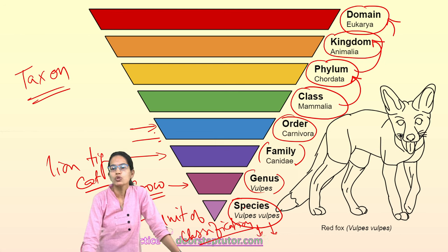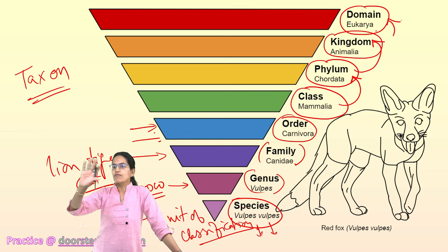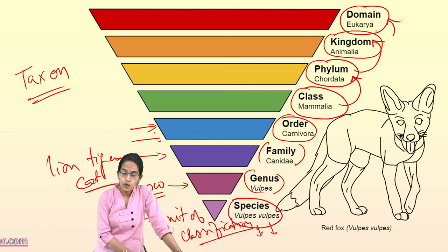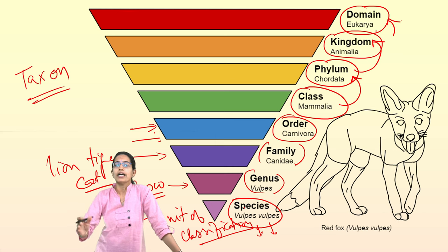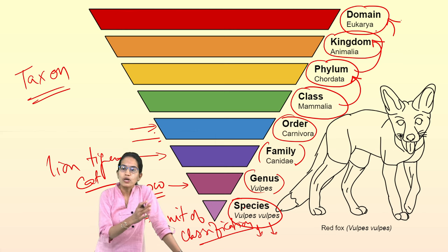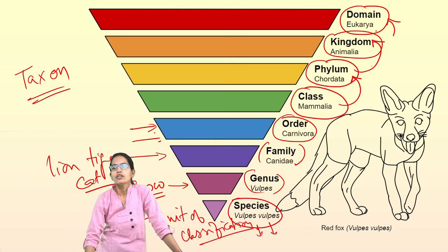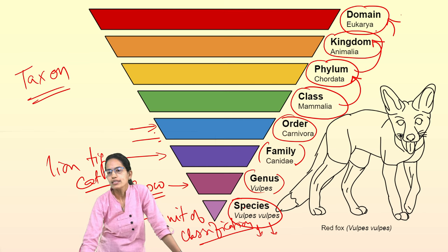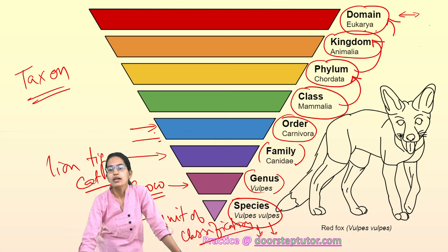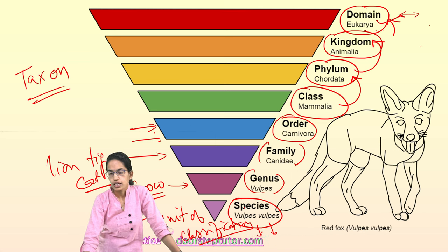Under the five kingdom classification, we talk about Monera, Protista, Fungi, Plantae and Animalia. Among these, Monera is the prokaryote. So the domain is just two: one is Eukarya, the other is Prokarya. The domain here for animals is Eukarya. Under the eukaryotes, we have four kingdoms: Protista, Fungi, Plants and Animals.